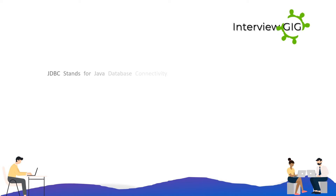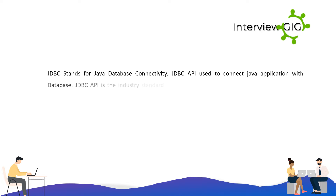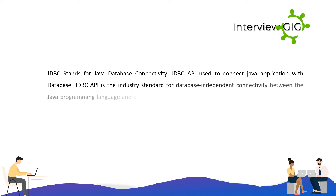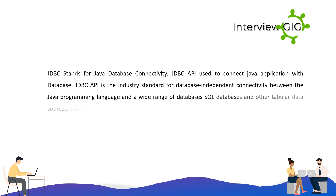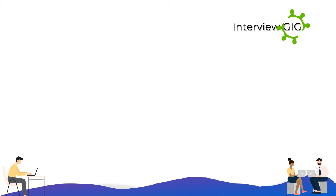JDBC interview questions and answers. JDBC stands for Java database connectivity. JDBC API is used to connect Java applications with databases. JDBC API is the industry standard for database-independent connectivity between the Java programming language and a wide range of databases — SQL databases and other tabular data sources such as spreadsheets or flat files.